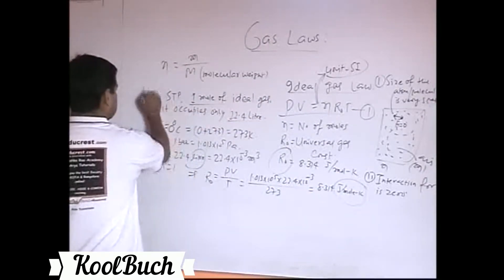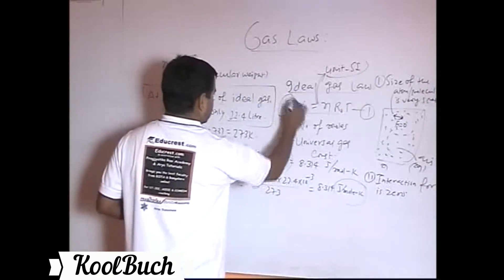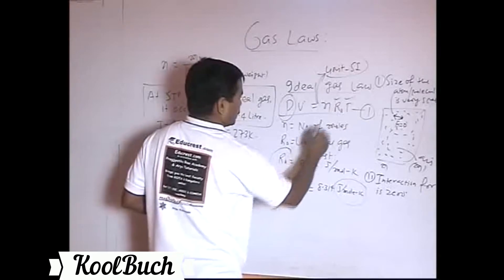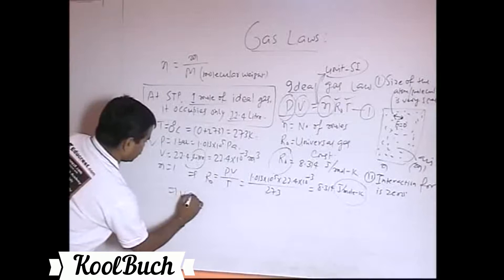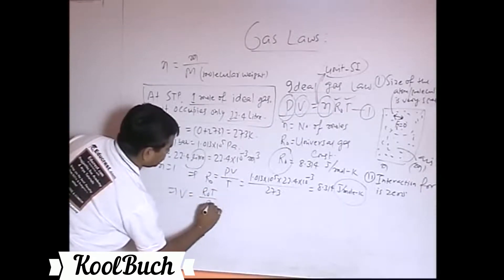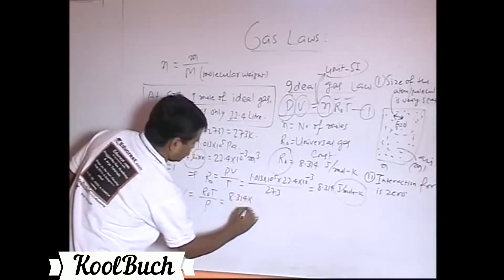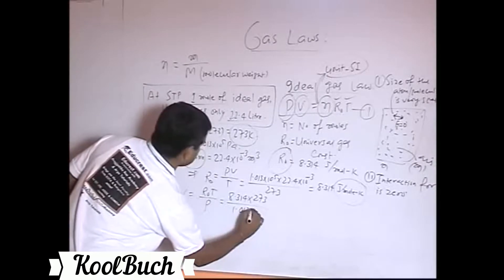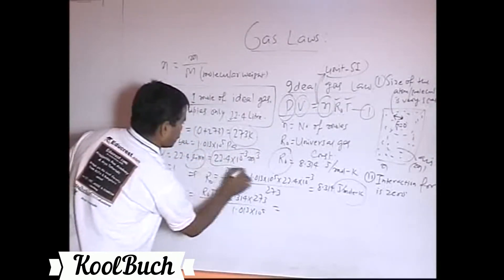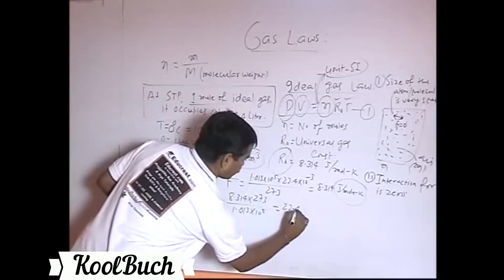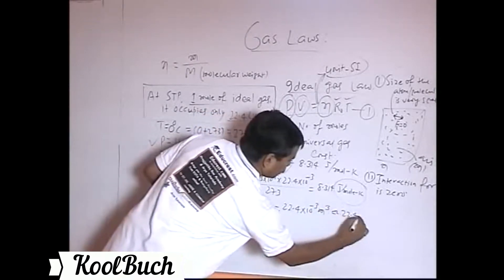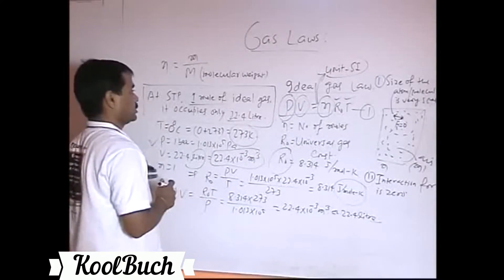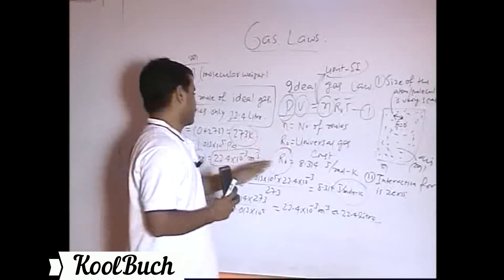We can also verify the 22.4 liter statement. Since we know pressure and temperature at STP, R₀ = 8.314, and n = 1, we solve for V: V = R₀T/P = (8.314 × 273) / (1.013 × 10⁵) = 22.4 × 10⁻³ cubic meters, which equals 22.4 liters. This is how the ideal gas law integrates all gas laws and can be used for problem solving.